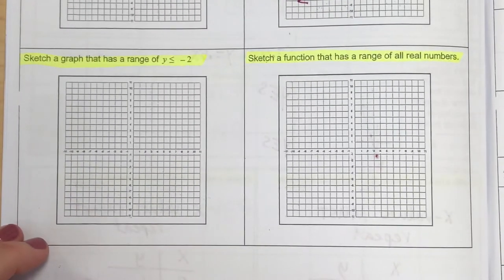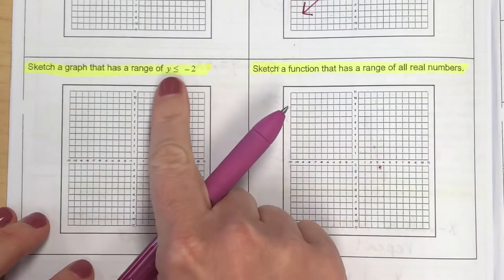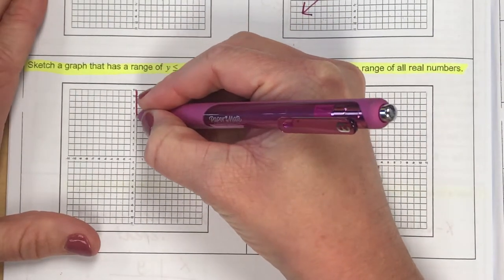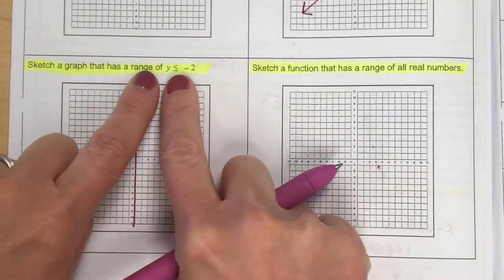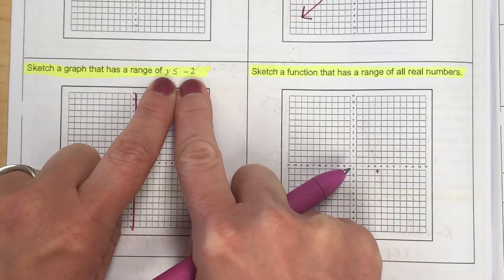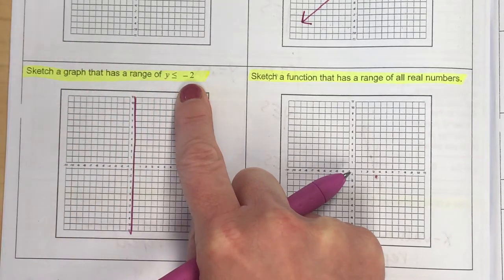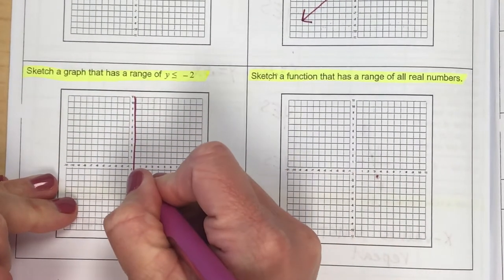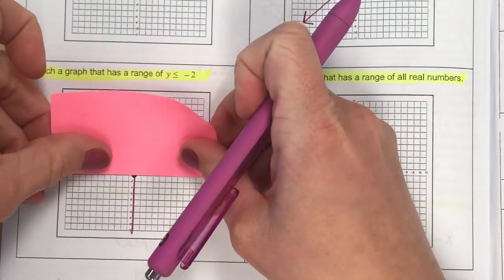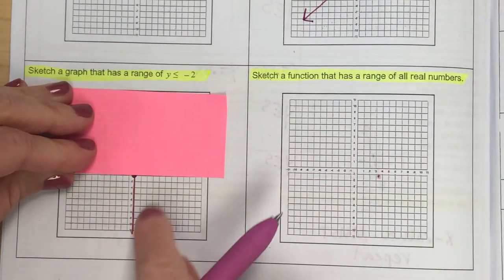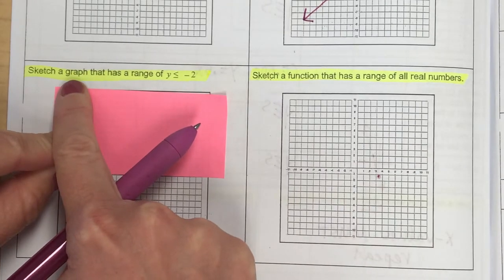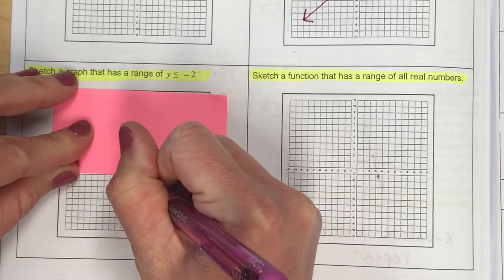The next two graphs are going to focus on the range of the function, which now refers to the y-axis. My task is to sketch a graph — it doesn't say function, just a graph — where the y values would be less than or equal to negative 2. So on the y-axis I'll find negative 2, and I want my picture to be down here where the y values are smaller than or equal to negative 2.